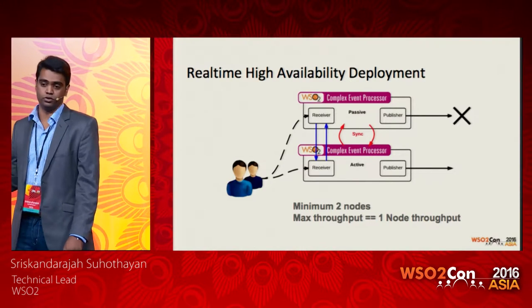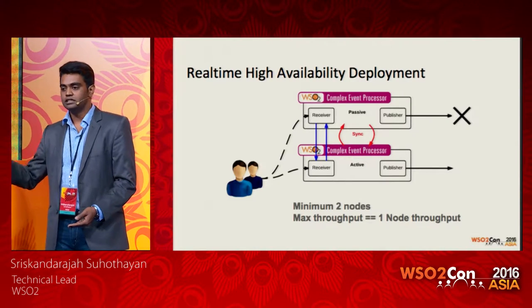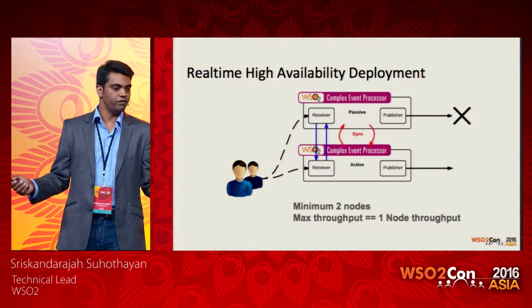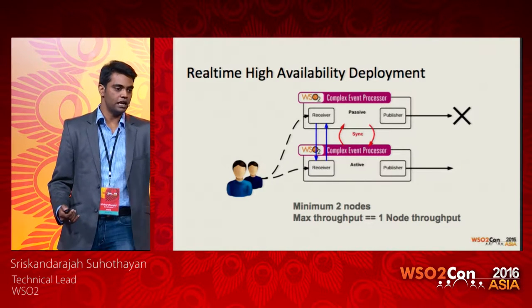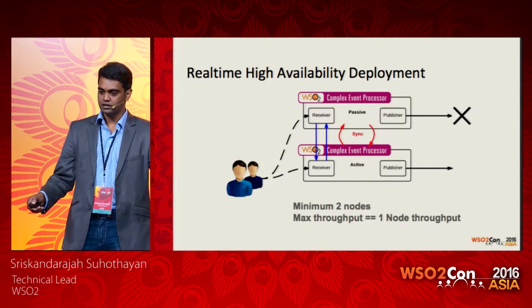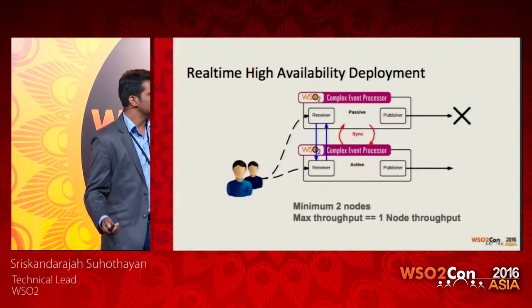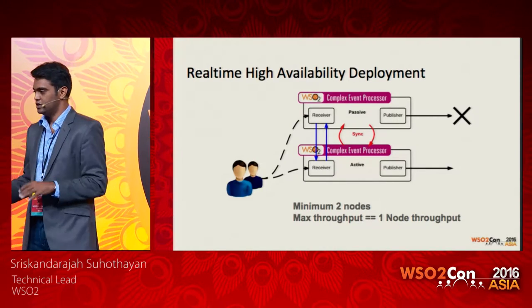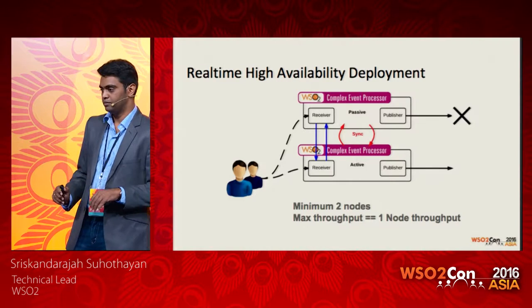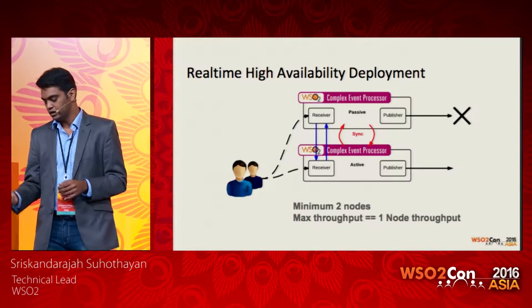What happens if both active and passive go down? When the active node comes back, it reloads the saved snapshot from the database, because it periodically stores state there. On a catastrophic failure, you at least get data from the last available snapshot — there may be a small data loss from that snapshot to the restart. But for a single-node failure, the internal syncing handles it. The key point: you need a minimum of two nodes, and maximum throughput equals one node throughput — you gain high availability, not throughput.